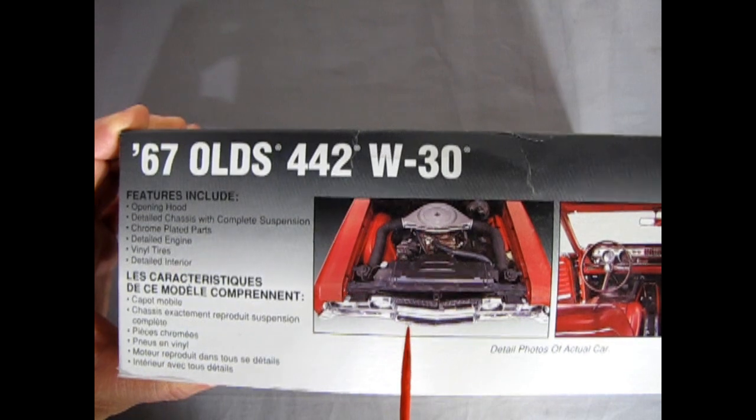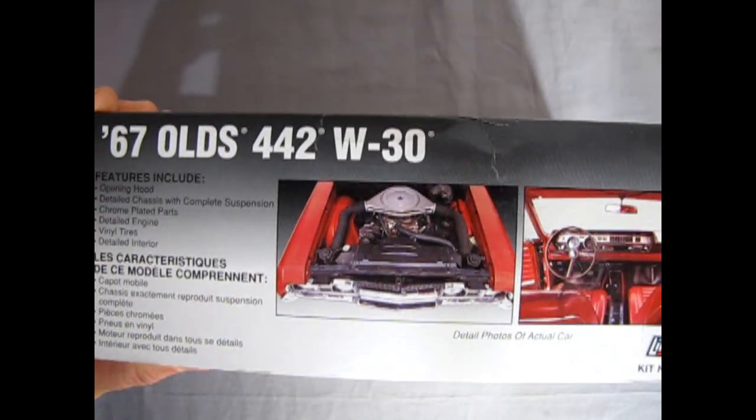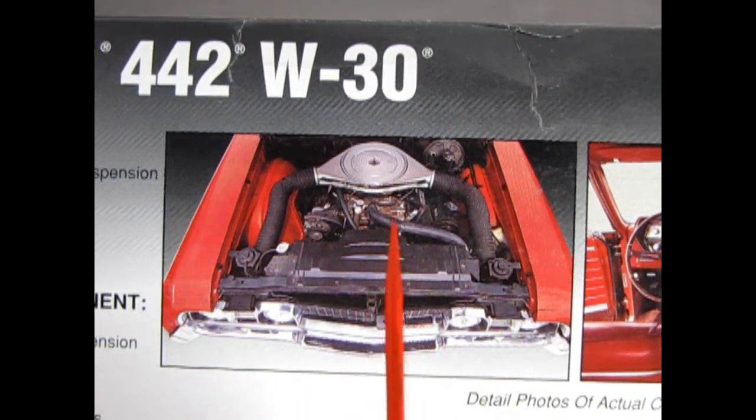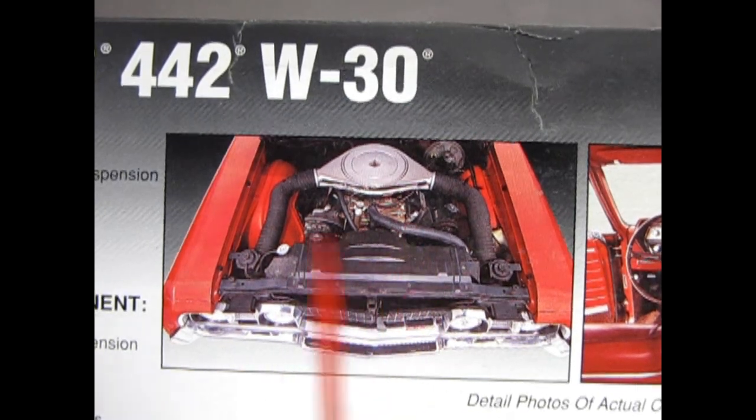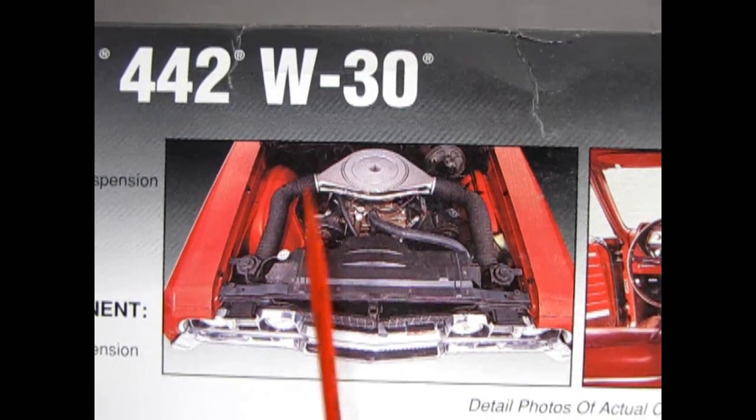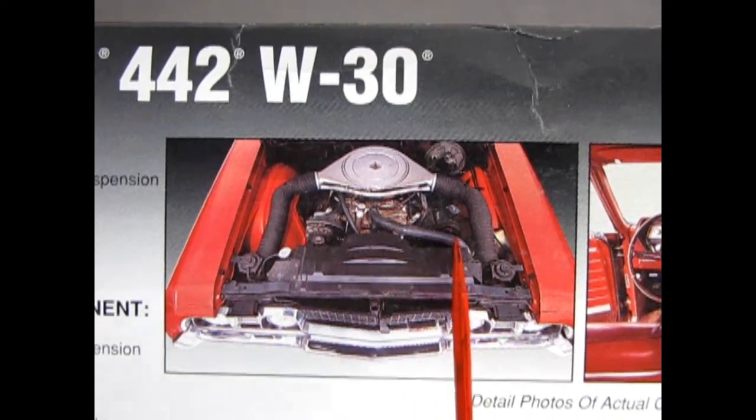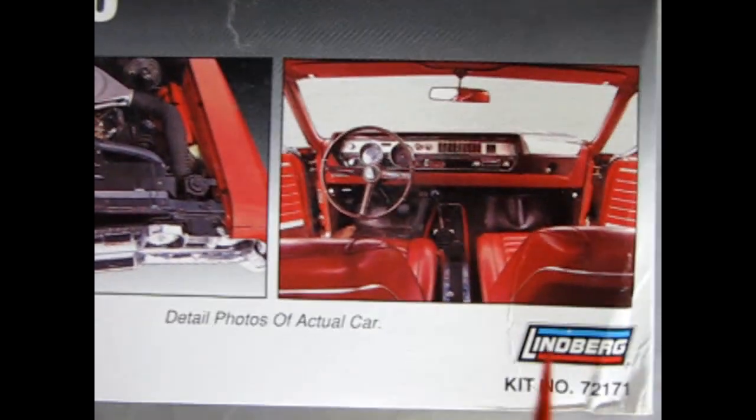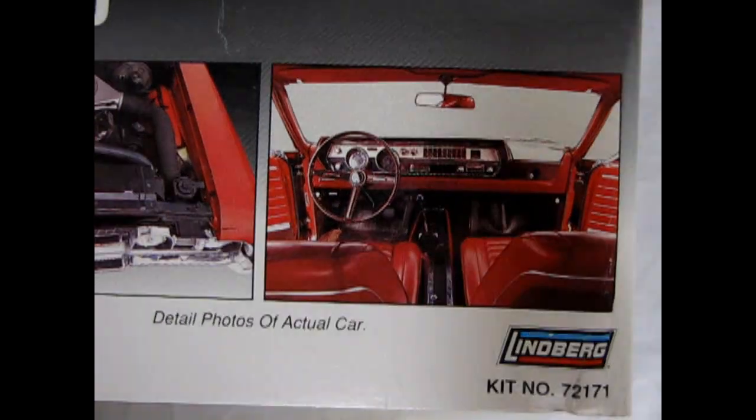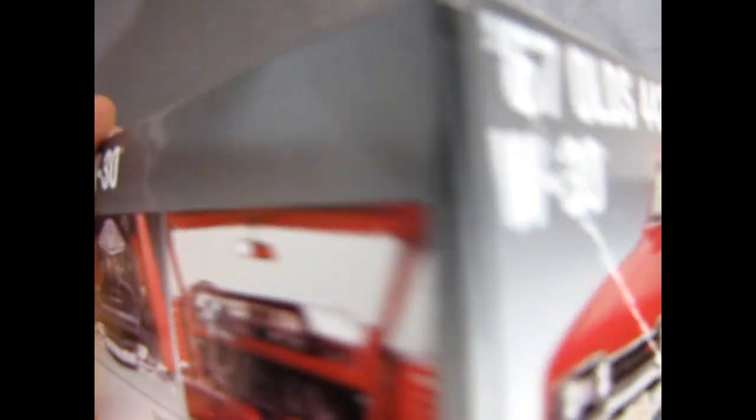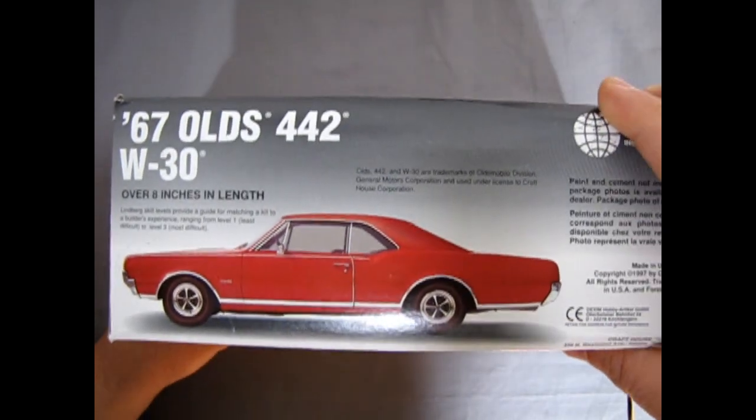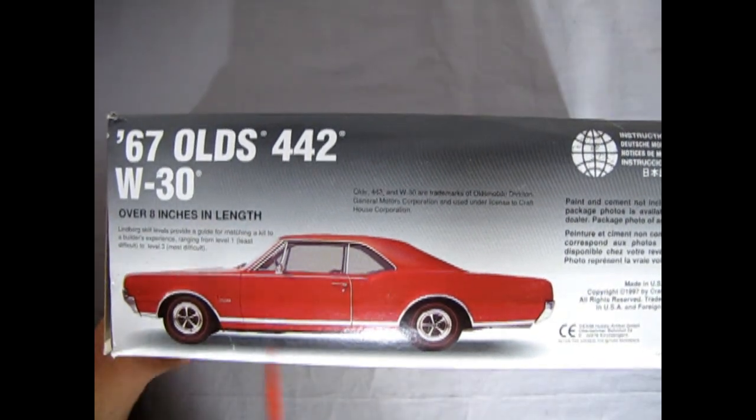They show photos of the actual car. You can see the engine has the gold. This is the 400 cubic inch engine because Oldsmobile still stood for 400 cubes, four speed dual exhaust, the W30 being the forced air induction package to it. There's the interior going in there. The end of the box looks like the top of the box. And then here we get the side view profile of the car.